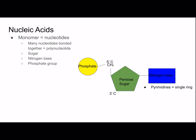The nitrogen base will differ between nucleotides. There are pyrimidines, which are single-ring nitrogen bases, and these include cytosine, thymine, and uracil — uracil is only found in RNA. Purines are double-ringed, and they include adenine and guanine.